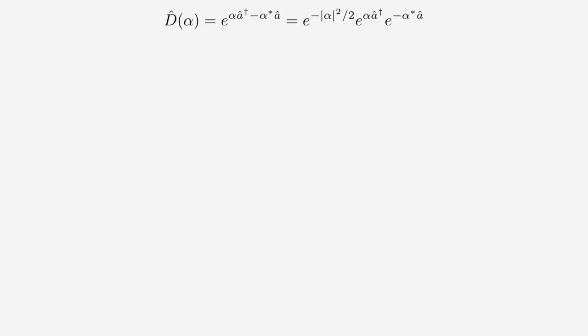The first property I want to look at is that the displacement operator is unitary. To show this, we first need to consider the adjoint of the displacement operator. From the video on functions of operators, the adjoint of an exponential function equals the exponential of the adjoint, because the exponential function is a real function. Using this, we can write the adjoint D†(α) as the exponential of the adjoint of the exponent.